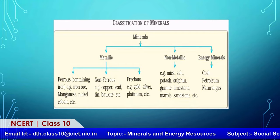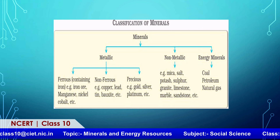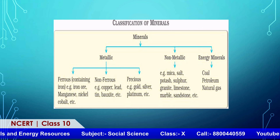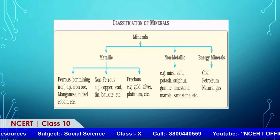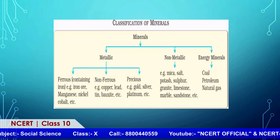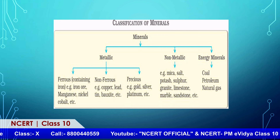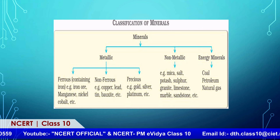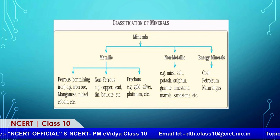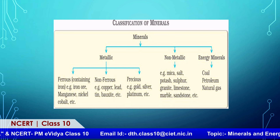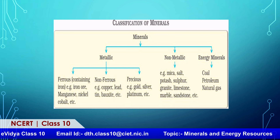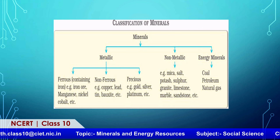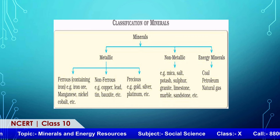On the basis of occurrence, we classify minerals as metallic, non-metallic, and energy minerals. Metallic minerals are further divided into ferrous — those containing iron, such as iron ore, manganese, and nickel — and non-ferrous, such as copper, lead, tin, bauxite, and precious metals like gold, silver, and platinum. Non-metallic minerals include mica, salt, potash, sulphur, and granite. Energy minerals include coal and natural gas.